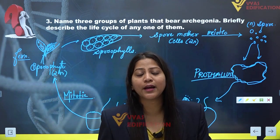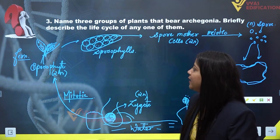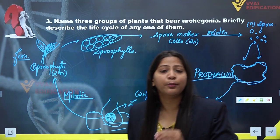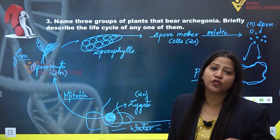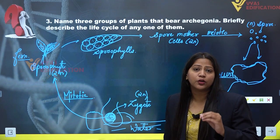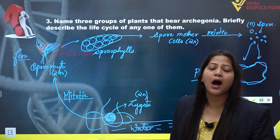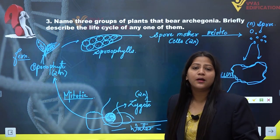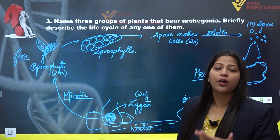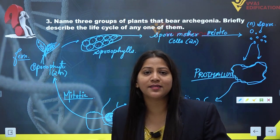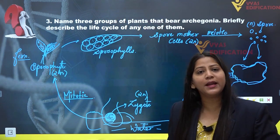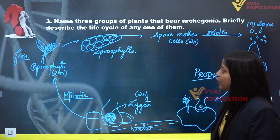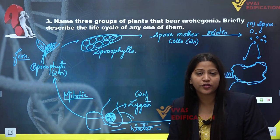So this is the life cycle of a fern or pteridophyte. The three groups of plants containing archegonia are bryophytes, pteridophytes, and gymnosperms. Archegonium is the female reproductive organ inside which the eggs or female gametes are formed. This completes the solution of question number three.